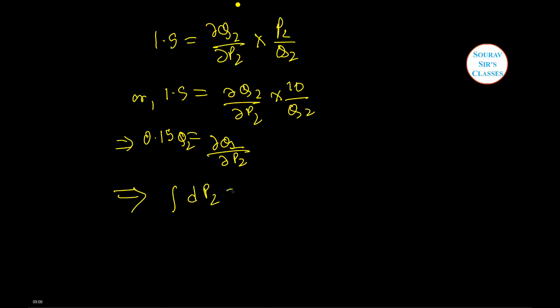Now let us take Q2 on this side. Integrating dP2 equals dQ2 by 0.15 Q2, we have P2 equals 1 by 0.15 log Q2.